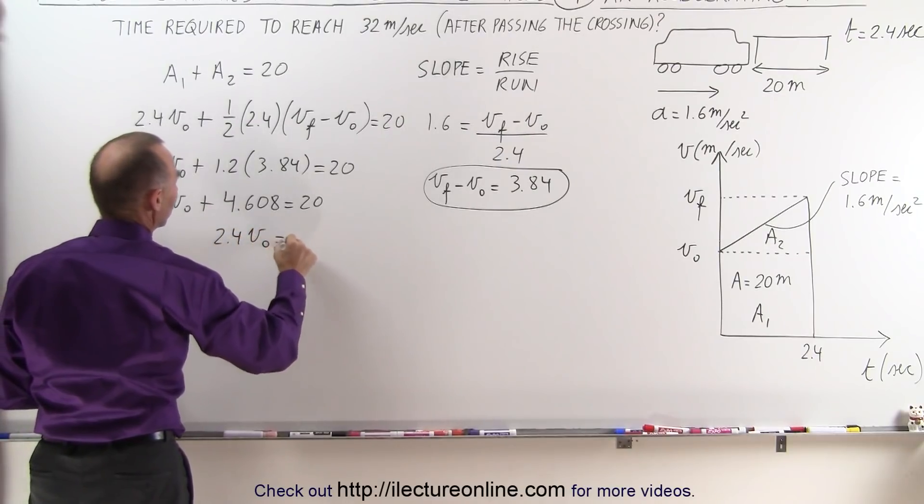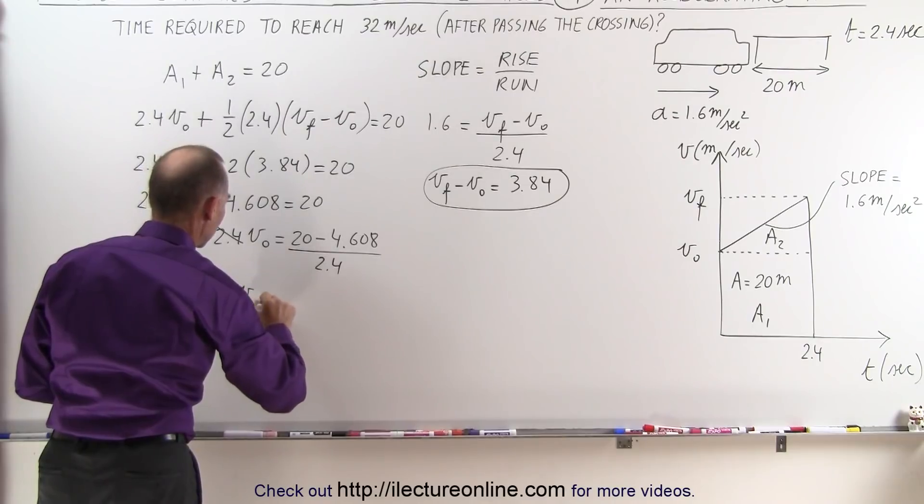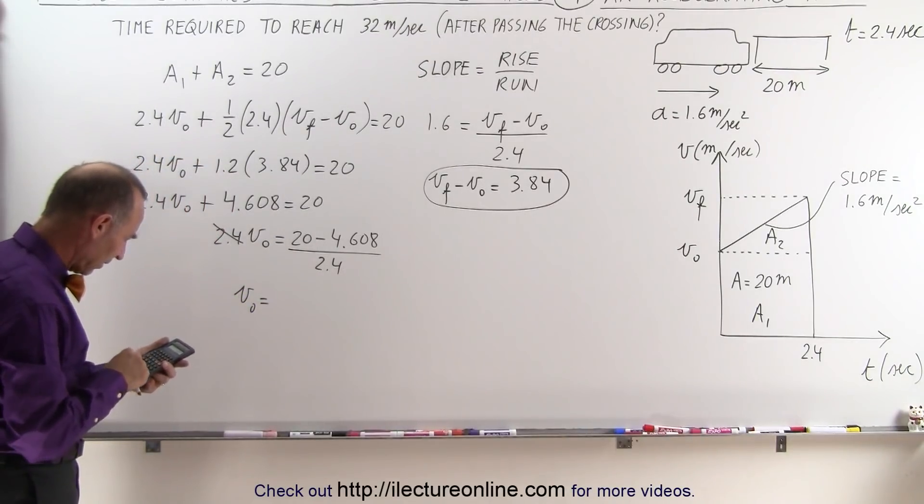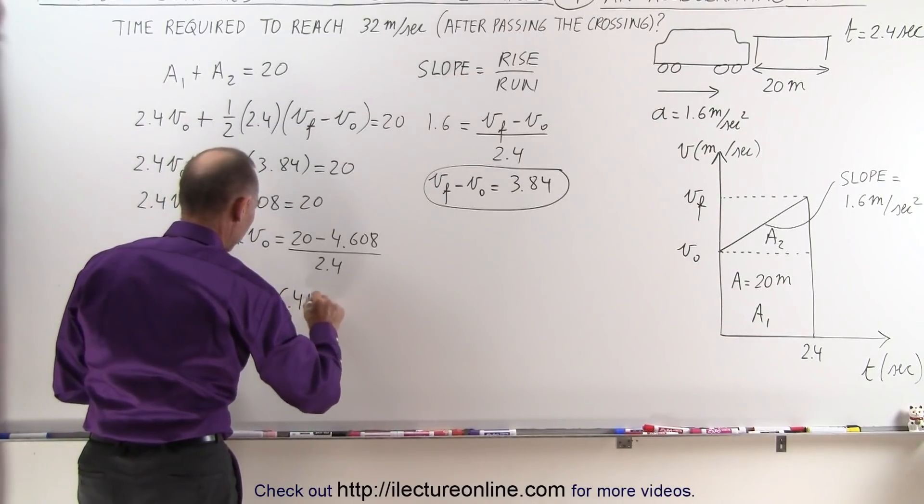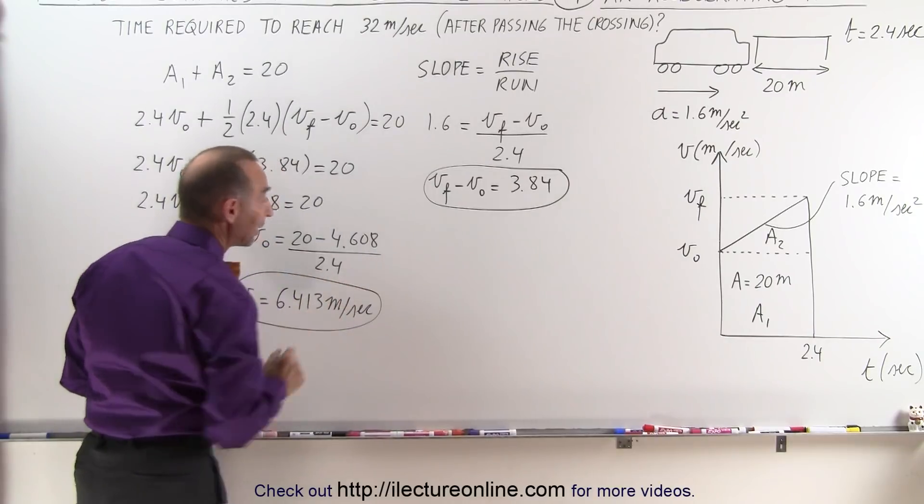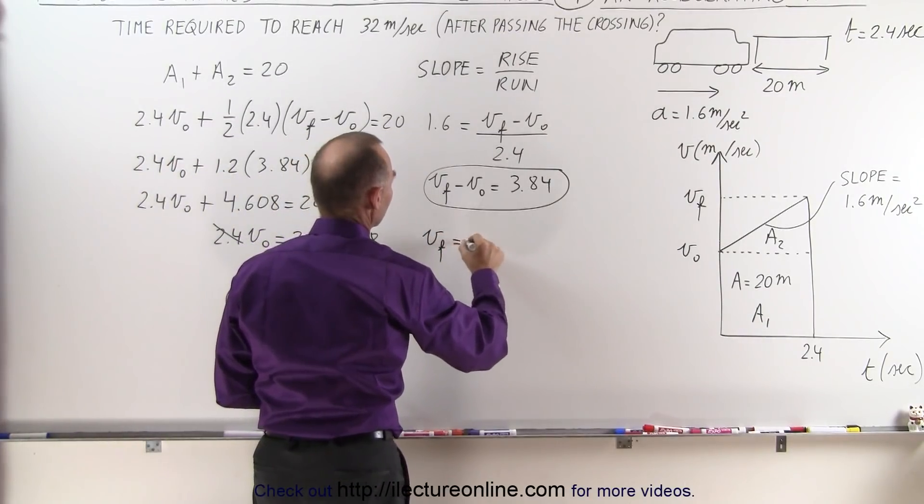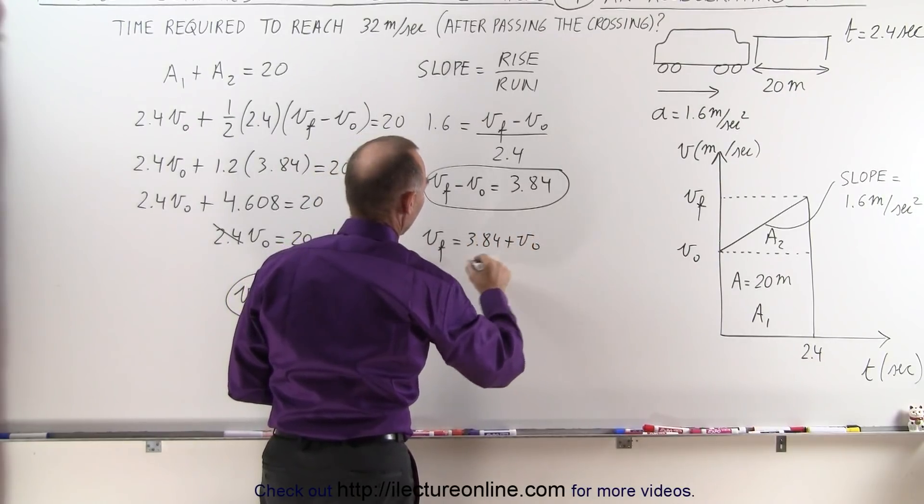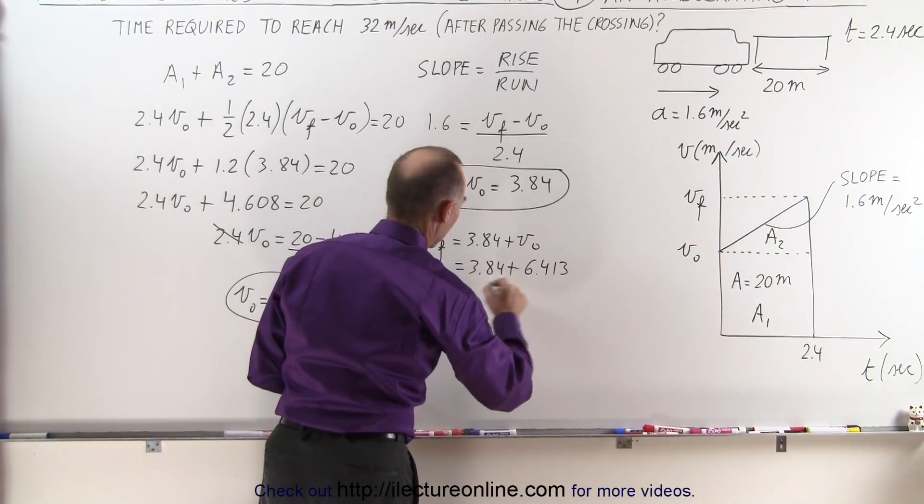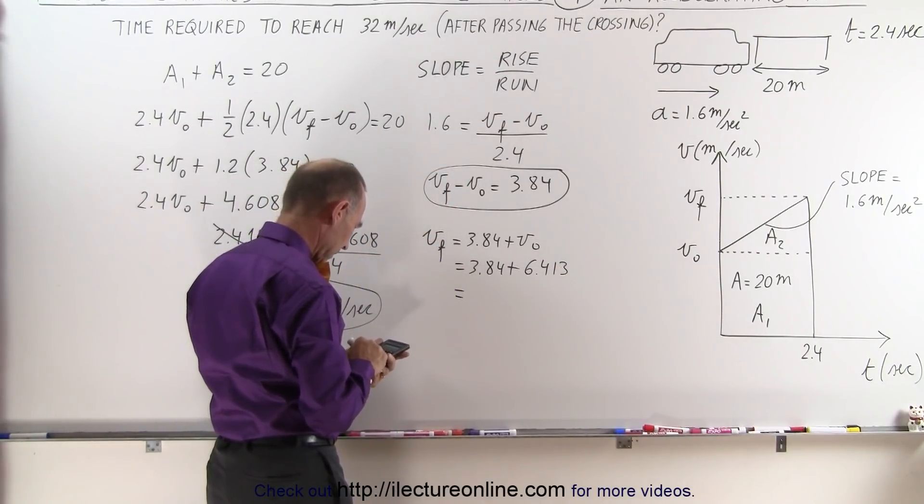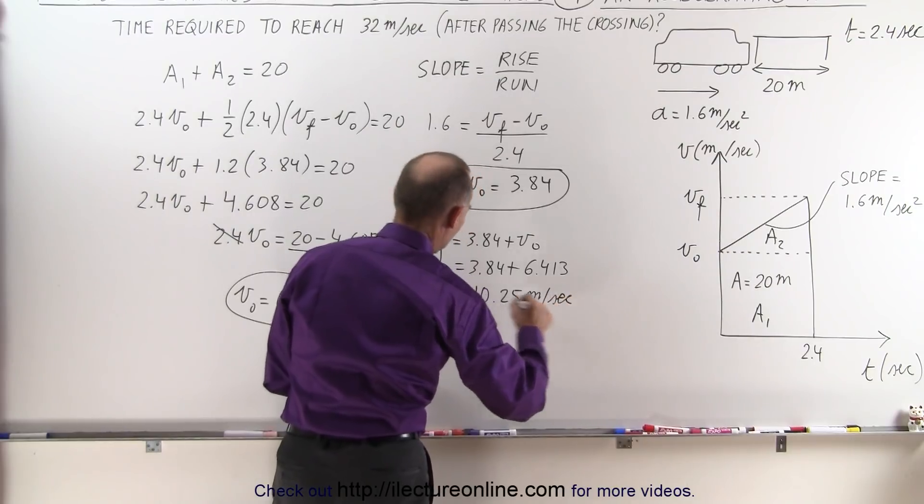So 2.4 v_initial equals 20 minus 4.608, and then divide both sides by 2.4. Now we know what our v_initial is equal to. So we subtract that from 20 and divide by 2.4, and we have an initial velocity of 6.413 meters per second. We keep a few extra decimal places just so we don't have a rounding error. So now we can find v_final. v_final equals 3.84 plus v_initial, and that would be 3.84 plus 6.413, which gives us 10.25 meters per second for our v_final.